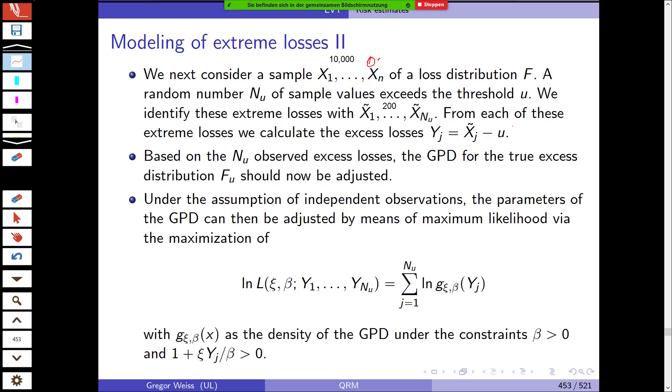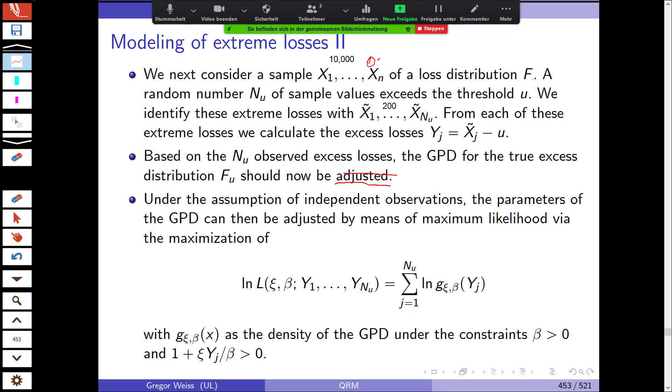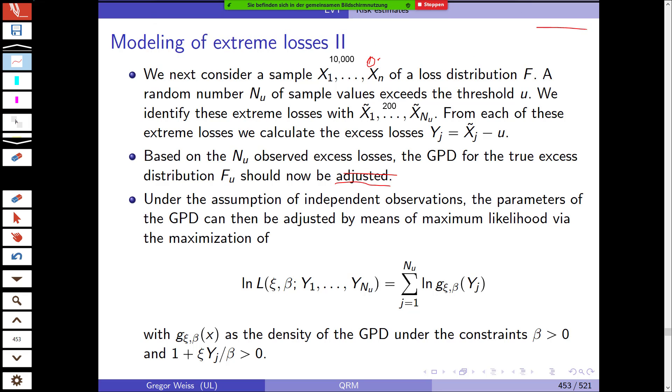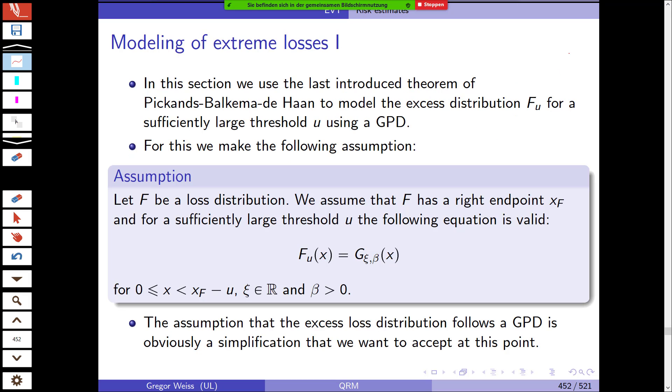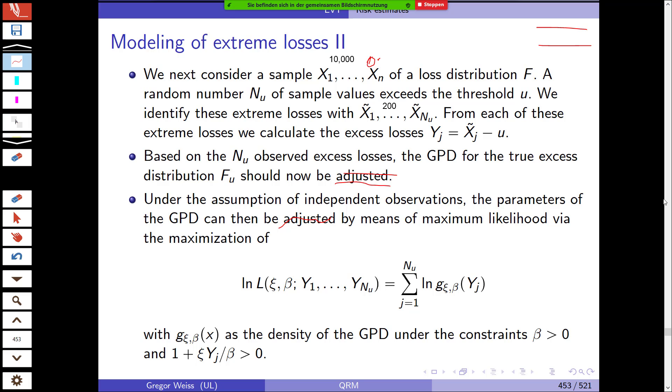Based on the N_u observed excess losses, we can now calibrate the generalized Pareto distribution for the true excess distribution F_u. Under the assumption of independent observations, remember that we need our sample observations to be independent, otherwise we'll have problems with the assumptions for the Pickands-Balkema-de Haan theory. Under this assumption, we can estimate the parameters of the generalized Pareto distribution by maximum likelihood.